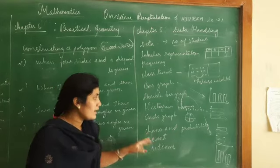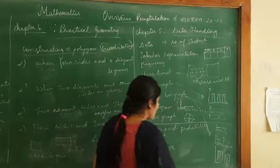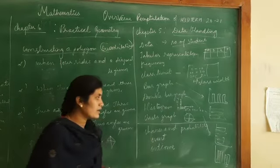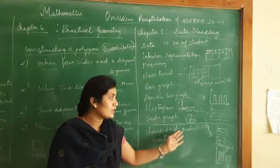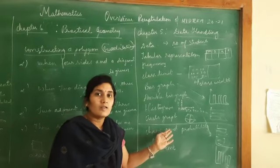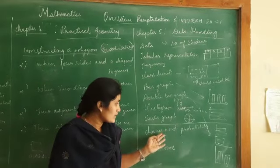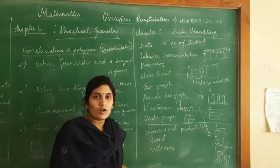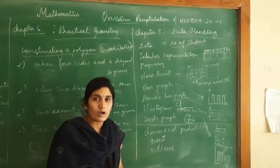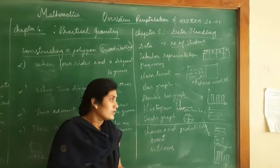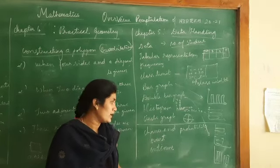The last part of this chapter is chance and probability. Chance and probability is the possibility of any outcome - for example, if you throw a die, what are the possible outcomes? That is probability.